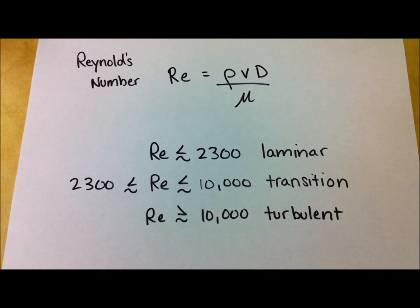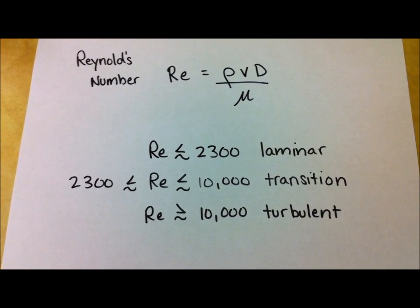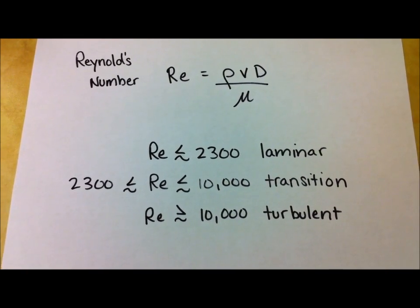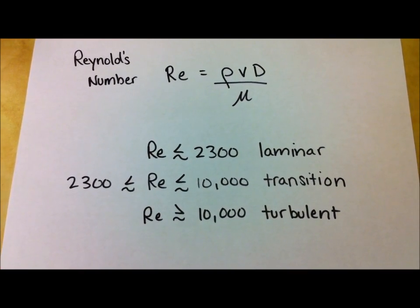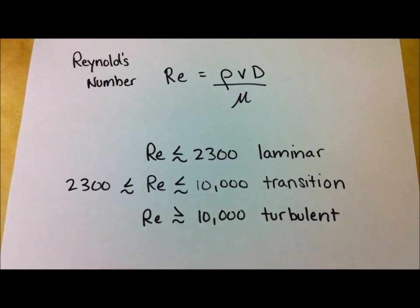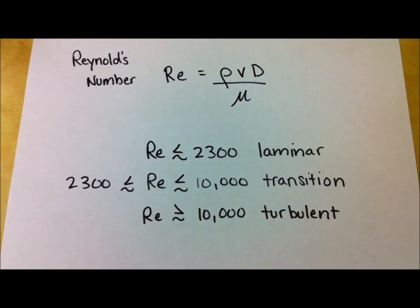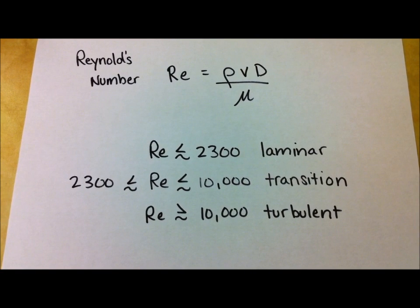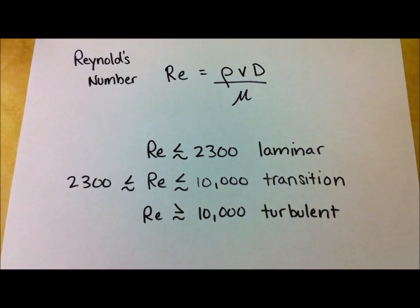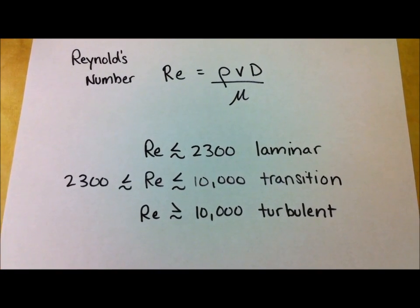If it's between roughly 2300 and 10,000, then it's in transition. And if it's greater than 10,000, then it's turbulent flow.